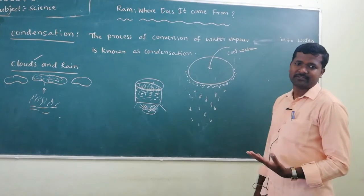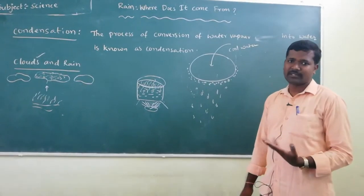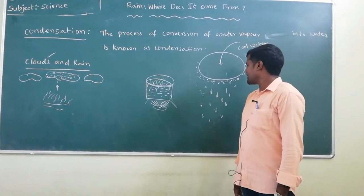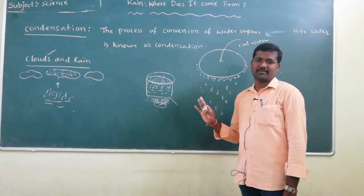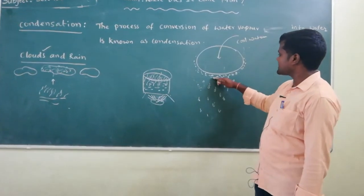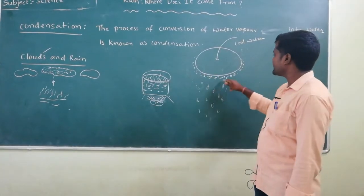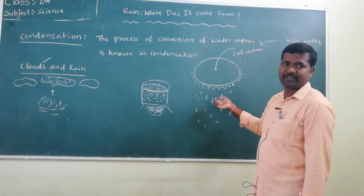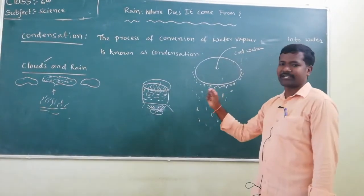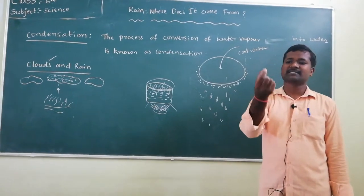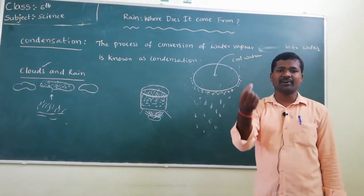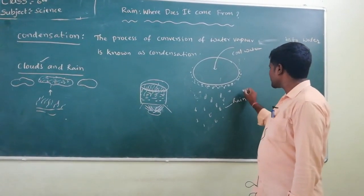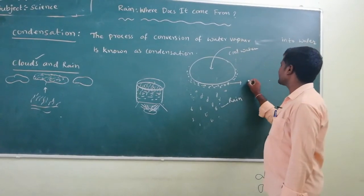When the boiling water evaporates and the lid is placed on the basin, water droplets form on the underside of the lid — this is an example of condensation forming rain in our kitchen. The water vapor is an example of cloud, and the water droplets falling down are an example of rain. One process is evaporation and the other is condensation.